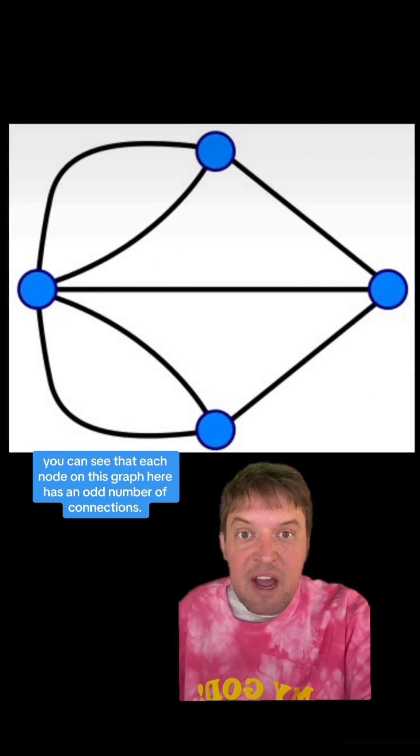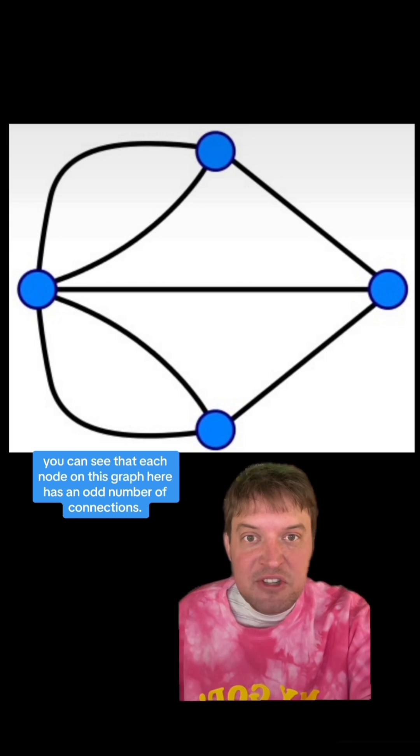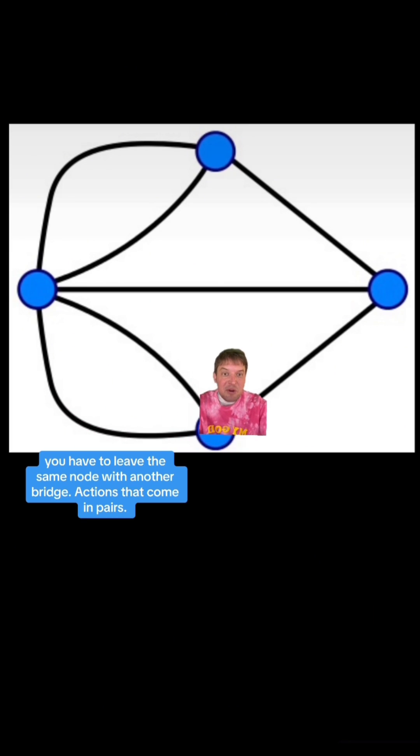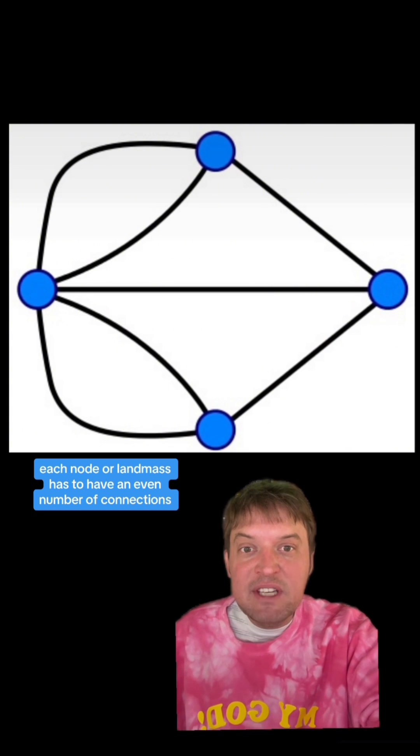And you can see that each node on this graph here has an odd number of connections. But once you get to a node with one bridge, you have to leave the same node with another bridge, actions that come in pairs. That means for it to work, each node or landmass has to have an even number of connections, with one exception.